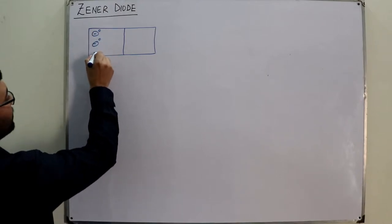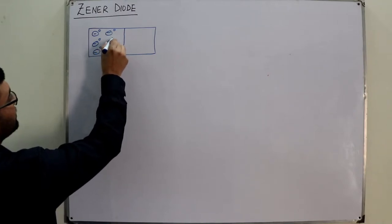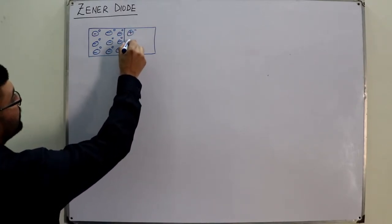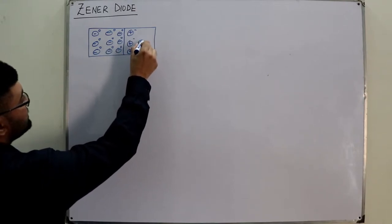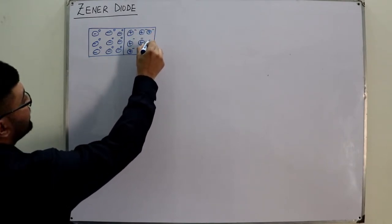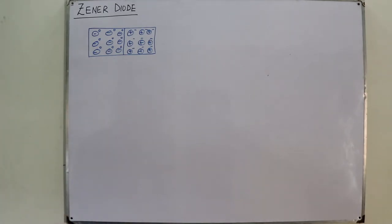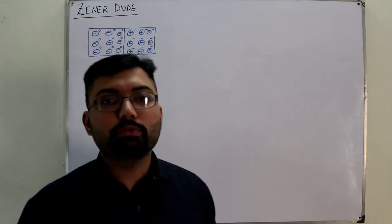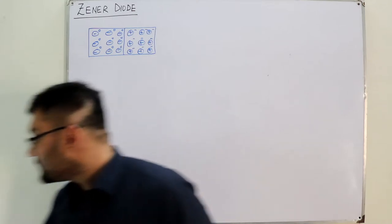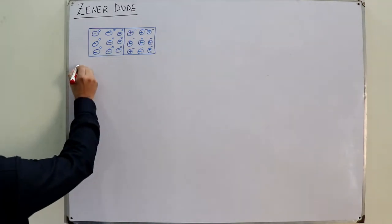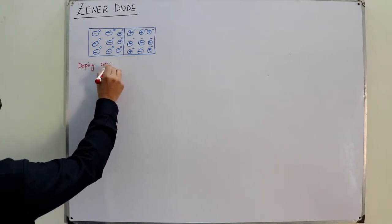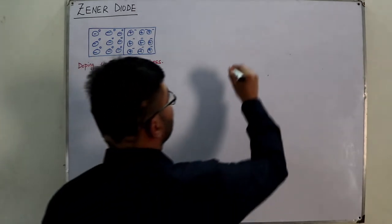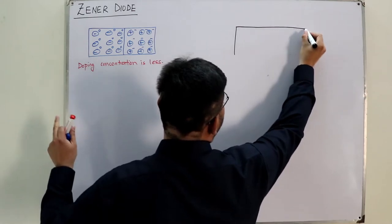On the p-side, you have negative ions with holes, and on the n-side, you have positive ions with electrons. This is a simple p-n junction diode where the doping concentration is less — meaning the impurity added is less. Now let me draw the Zener diode for the same width.